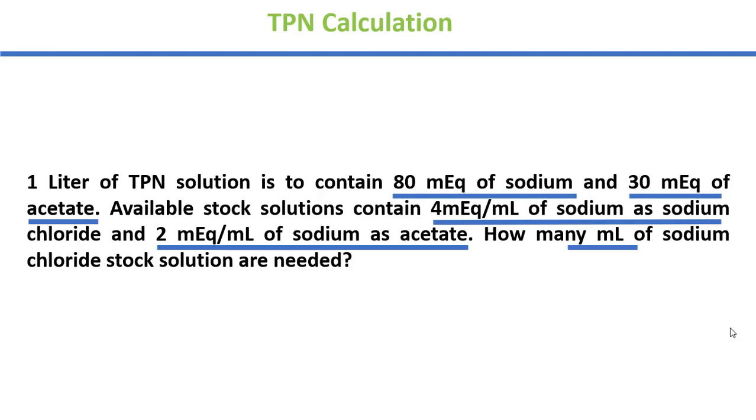To jo cheezein important hain yahan par humne inko yahan par underline kiya. 80 milliequivalents of sodium, 30 milliequivalents of acetate, 4 milliequivalents of sodium as sodium chloride and 2 milliequivalents of sodium as acetate. Aapse request hogi ke jo copy hai wo maintain karen apne usme yeh values likh lein. Kyunki next slide par jab hum calculation karenge to bar bar hum back hokar in values ko nahi dekhenge.